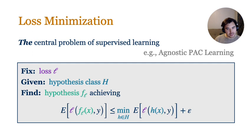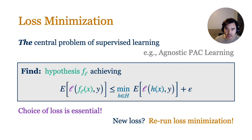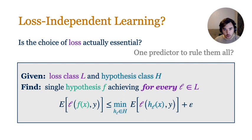Loss minimization is the central problem of supervised learning theory. In this problem, we first fix a loss function L — some measure of the quality of a prediction for a given outcome. Then we're given a hypothesis class H, and we're told to find the hypothesis that minimizes the expected loss over H. Here I'm using F sub L intentionally to emphasize that the optimal hypothesis may depend intimately on the choice of loss function.